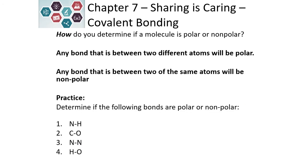Any bond that occurs between two different atoms will be polar. The only nonpolar bonds are between the same atoms — the same elements. Practice by trying to determine if these bonds are polar or nonpolar. If we look at nitrogen and hydrogen, because they are different, it is a polar bond. Nitrogen is more negative, hydrogen is more positive. We represent this as an arrow with a plus sign on the positive, less electronegative side of the bond.